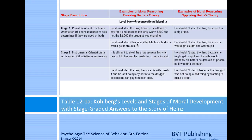Opposing Heinz in stage one: he shouldn't steal the drug because it is a big crime; or he shouldn't steal it because he would get caught and sent to jail. Both of these motivations are driven by external forces.